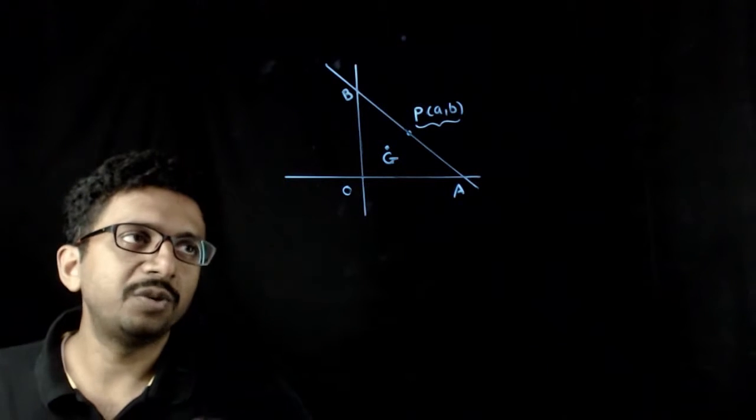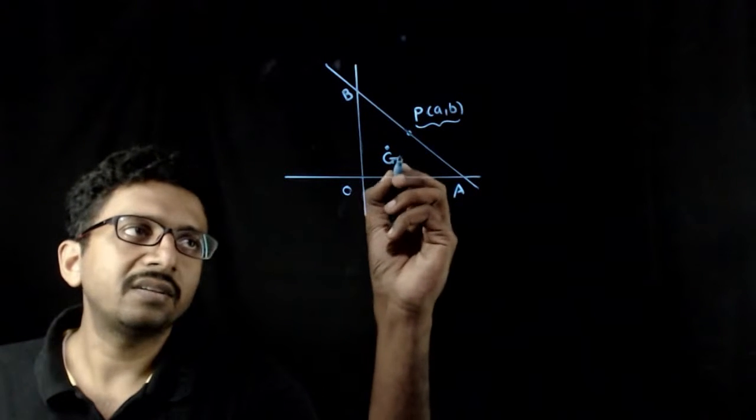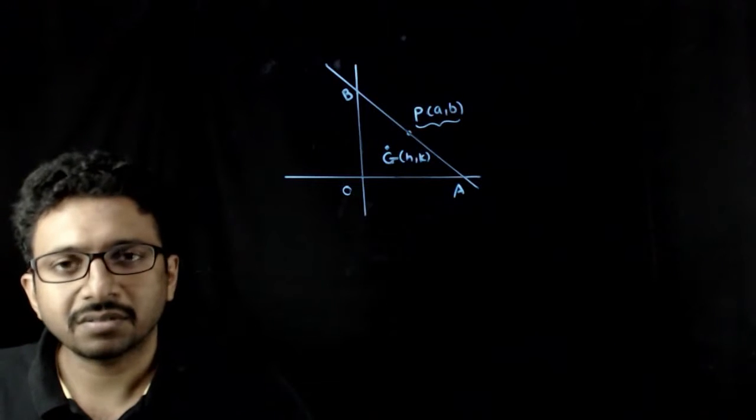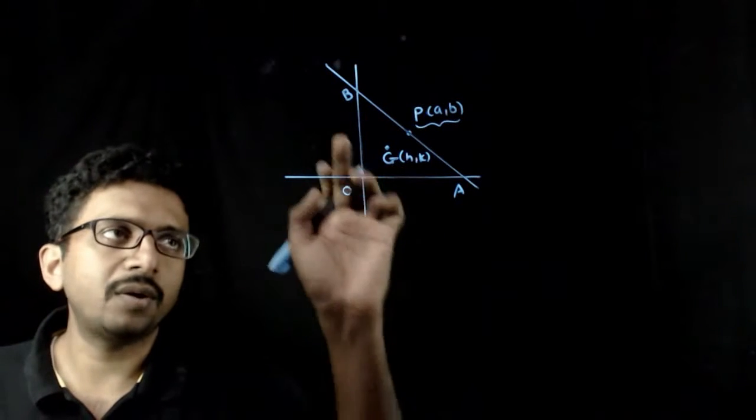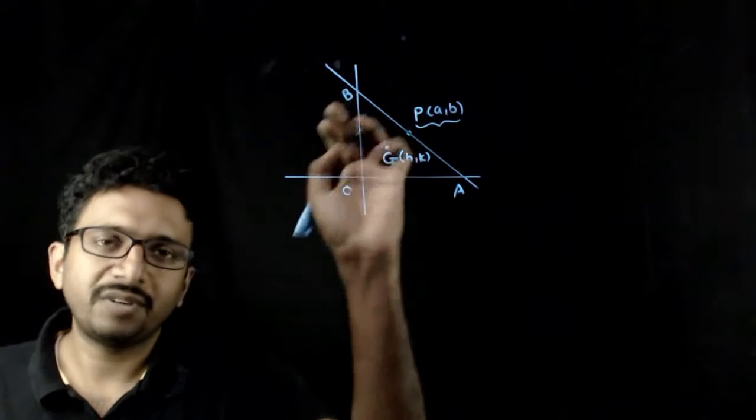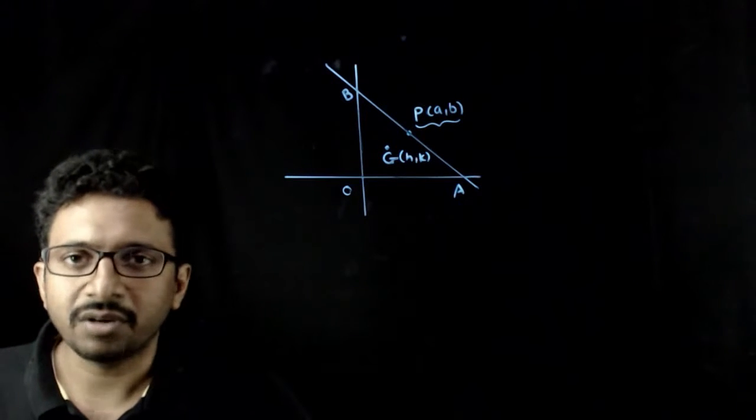Now what we are assuming is, let us assume that H comma K be a point on the locus. If H comma K is a point on the locus, this should be the centroid of triangle ABC in some configuration.